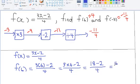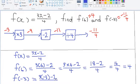f of negative 3 now, using the same function. The numbers remain the same and the letter changes. Instead of 3x, we have 3 times negative 3, subtract 2, all over 4.